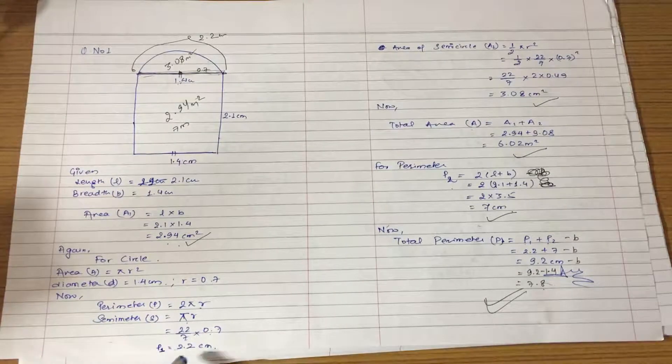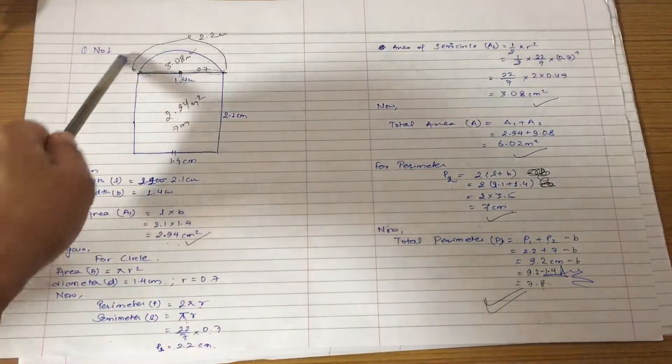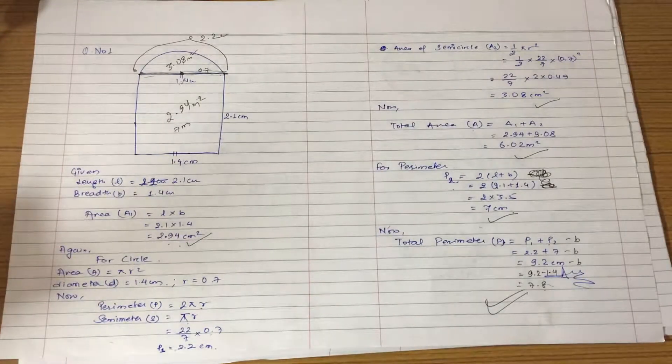It will be 0.7, the answer is 2.2. If we have the area of semi circle, then this is 1 by 2 πr².